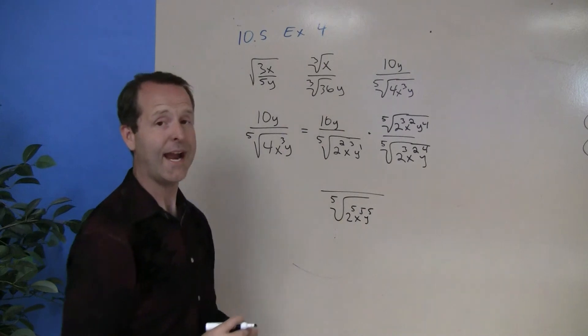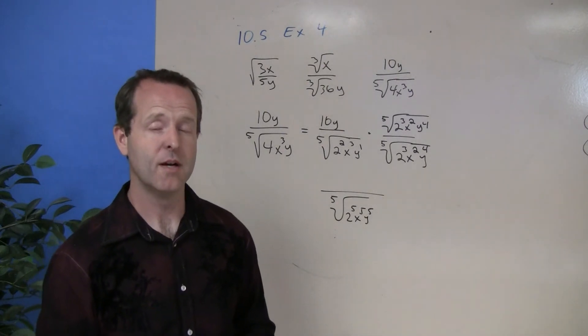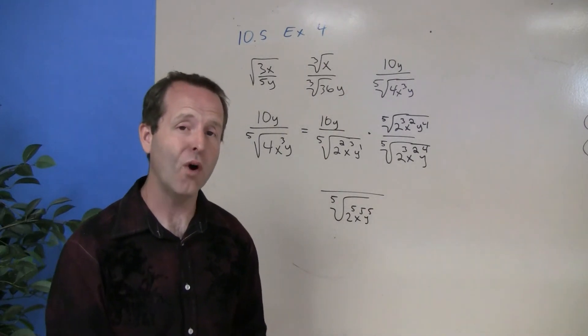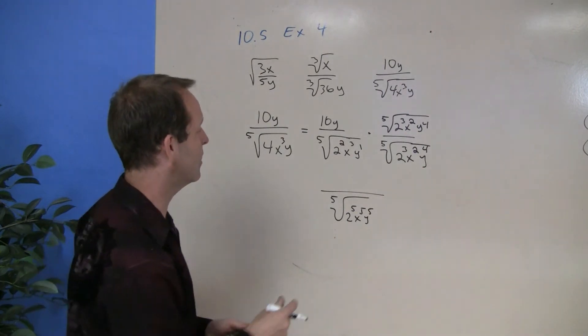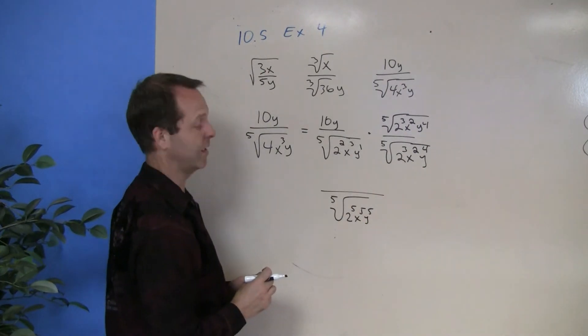And that's not by accident. We intentionally set up the problem by choosing the right version of one so that the denominator has all fifth roots in there.